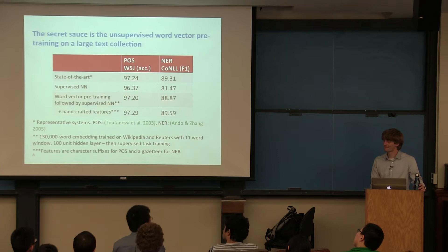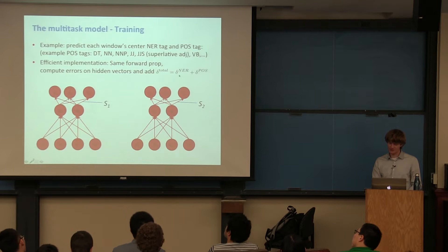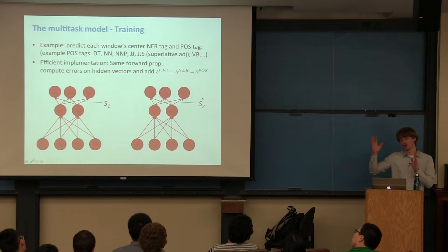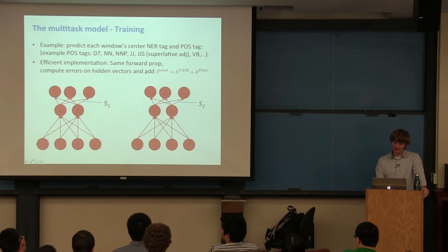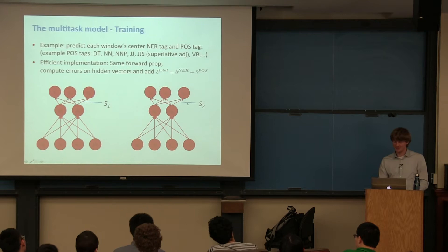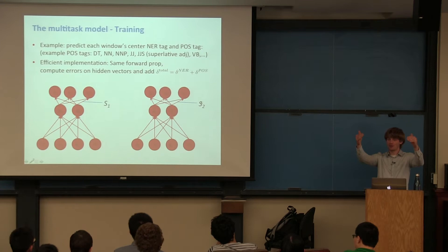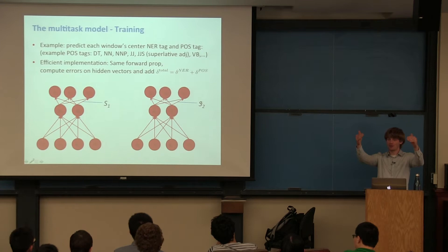An important clarification: for the last softmax layer, it is only updated with its own task's delta. The summation of deltas only applies to the layers that are actually shared. The very first delta is different for each classification problem; once you reach the layers that are shared, those are the ones you sum up. It's really important to write this out carefully: take the derivatives of the sum of two cross-entropy errors and you'll see that the derivatives of the shared components are indeed the sum of the two individual derivatives.